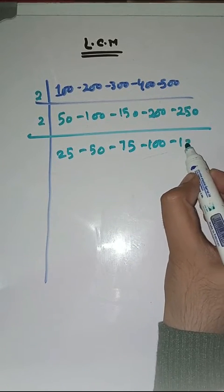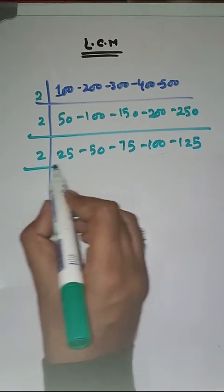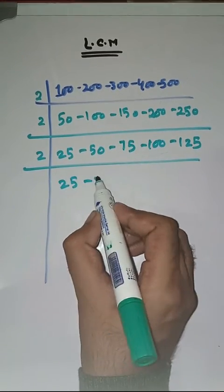Again with 2. 25s are 50, 75 as it is, 2 times 50s are 100 and 125 as it is.